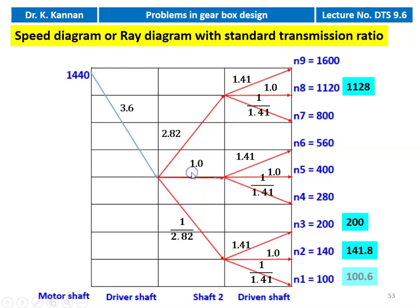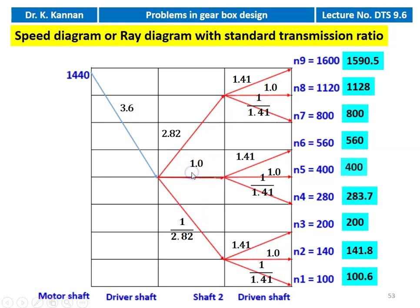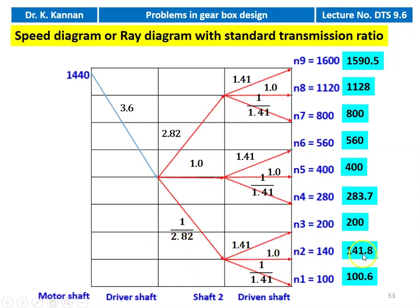The correct speeds are calculated using standard transmission ratios. At 400 RPM there is no change. 400 × 2.82 = 1128, and 1128 × 1.41 = 1590.5. Decreasing by 1.41 gives 800. 400 × 1.41 = 560. 400 / 1.41 = 283.7. 400 / 2.82 = 141.8, and 141.8 × 1.41 = 200, and 141.8 / 1.41 = 100.6. These are the actual speeds for the standard transmission ratios.